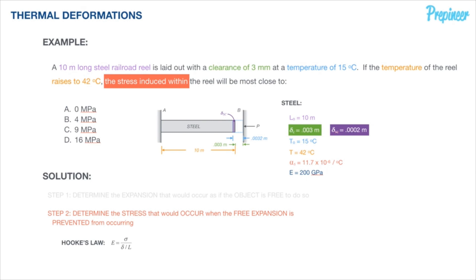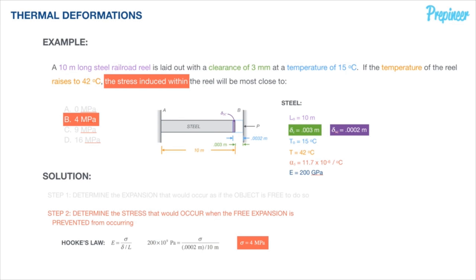Now we simply plug and chug. Our delta is only the constrained portion — 0.0002 meters, not the full 3.2 millimeters. A common exam mistake is using the full free expansion value, but only the amount past the clearance induces stress. Calculating it out, the induced stress is 4,000 pascals, or 4 megapascals. Looking at our answer options, answer B — 4 megapascals — is the correct answer.